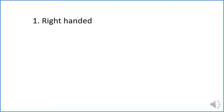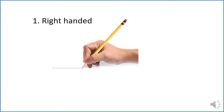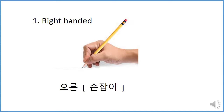Let's look at Korean. First, right-handed. In Korean, we say 오른. 오른 means the direction to the right. 손잡이 — 손 means hand. Right-handed person, we call 오른손잡이.